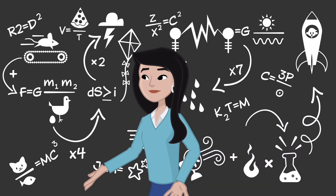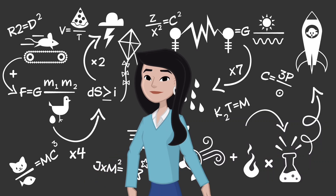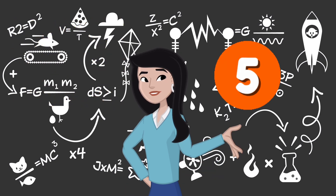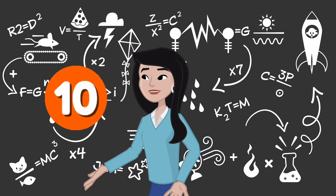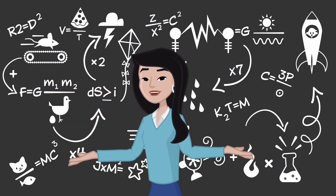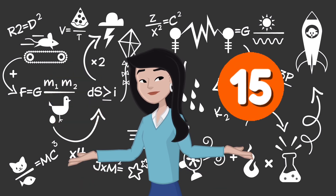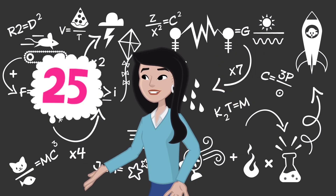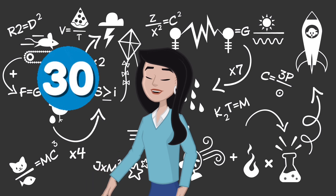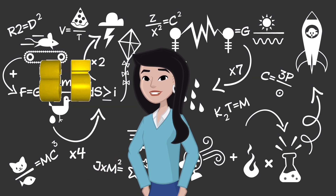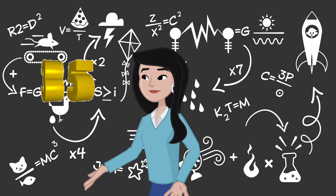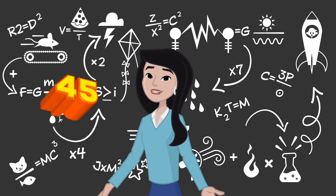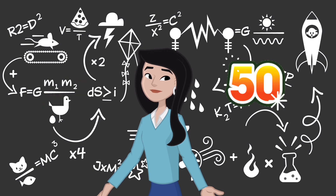Hi Kids! Let's learn the table of 5. 5 1's are 5, 5 2's are 10, 5 3's are 15, 5 4's are 20, 5 5's are 25, 5 6's are 30, 5 7's are 35, 5 8's are 40, 5 9's are 45, 5 10's are 50.